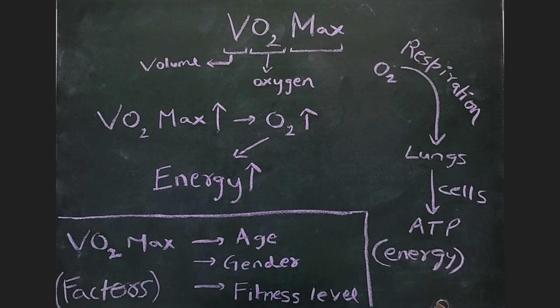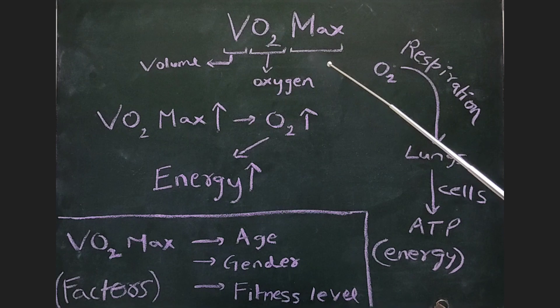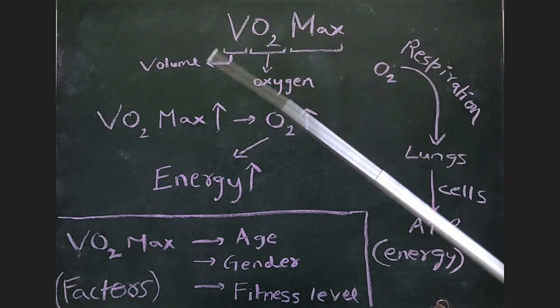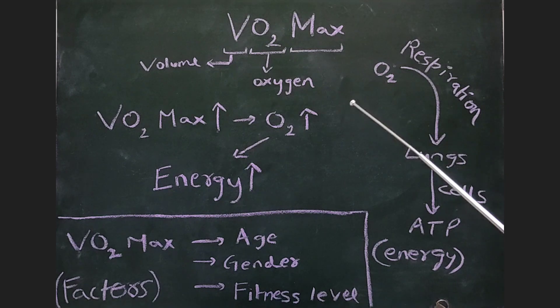So first of all, VO2 max is a combination of three parts: V for volume, O2 for oxygen, and max for maximum. So essentially, VO2 max means maximum volume of oxygen that your body can absorb and use during exercise.